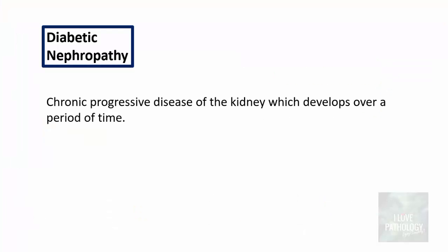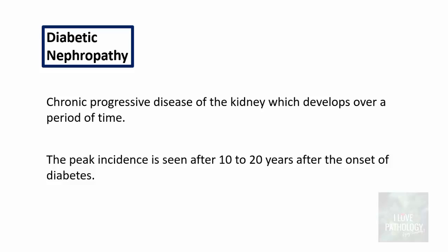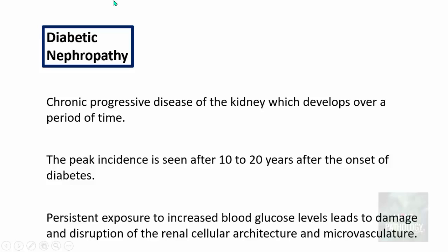Diabetic nephropathy is a chronic progressive disease of the kidney that develops over time. The peak incidence is seen 10 to 20 years after the onset of diabetes, due to persistent exposure to increased blood glucose levels. High blood glucose leads to damage and disruption of renal cellular architecture and microvasculature through the mechanisms we just discussed.